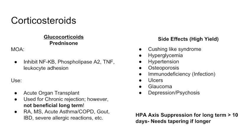Obviously if you give somebody a steroid, they can develop Cushing-like syndrome. Steroids also cause hyperglycemia, hypertension due to increased sensitivity to norepinephrine and epinephrine, osteoporosis, infections, ulcers, glaucoma, depression, and psychosis — among many other side effects.